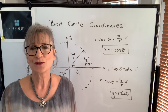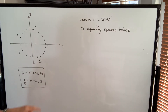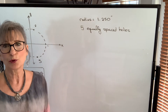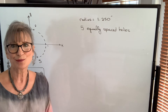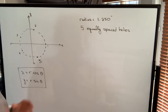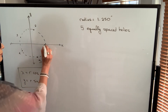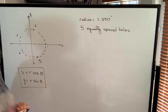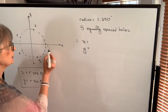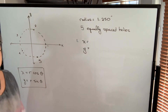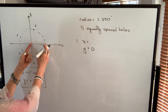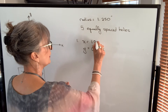Let's look at a particular example. Our example has five equally spaced holes on a circle with a radius of 1.250 inches. If you're given the diameter, simply divide by two to get the radius. We start with hole number one placed on the positive x-axis. When a hole is on the x-axis, the y value will be zero and the x value will be the radius, so the x-coordinate is 1.250 inches and the y value is 0.000 inches.